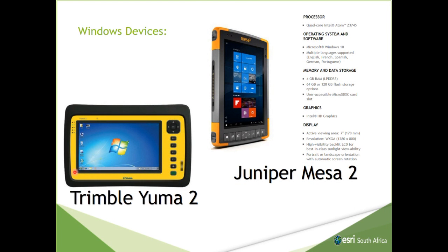Other Windows devices: Trimble Yuma 2, the Juniper Mesa 2. The Juniper Mesa 2 is more of a small computer — you get a docking station for it, you can plug a screen, a keyboard and a mouse into it, so it's basically a computer on its own. You plug it out and you can do your fieldwork — one device for multiple purposes. The Trimble Yuma 2 is also quite a workhorse device. It will obviously run ArcPad and all those applications. I think the Mesa 2 runs about 30,000 Rand, but send me an email and I can give you proper pricing afterwards.